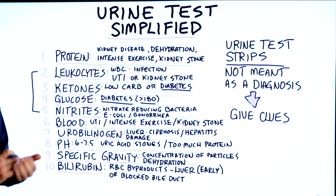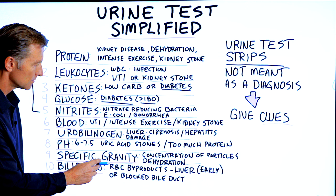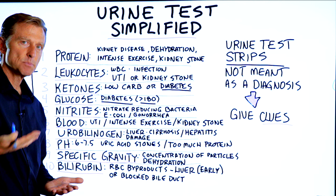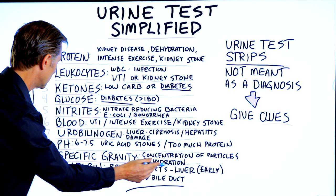Number ten is bilirubin. It's the breakdown of red blood cells, and if there's bilirubin in your urine, that could be an early sign of liver damage. It can also indicate a blocked bile duct where everything is backing up to the liver and spilling into the blood, so it could be a problem with the gallbladder or the liver. If you see both bilirubin and urobilinogen, think liver.